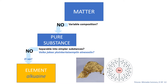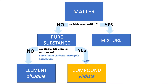Gold — kulta — is a good example of an element — alkuaine — a substance that cannot be chemically broken down into simpler substances. It is composed of only a single type of atom. A compound — yhdiste — is a substance with constant composition that can be broken down into elements by chemical processes.